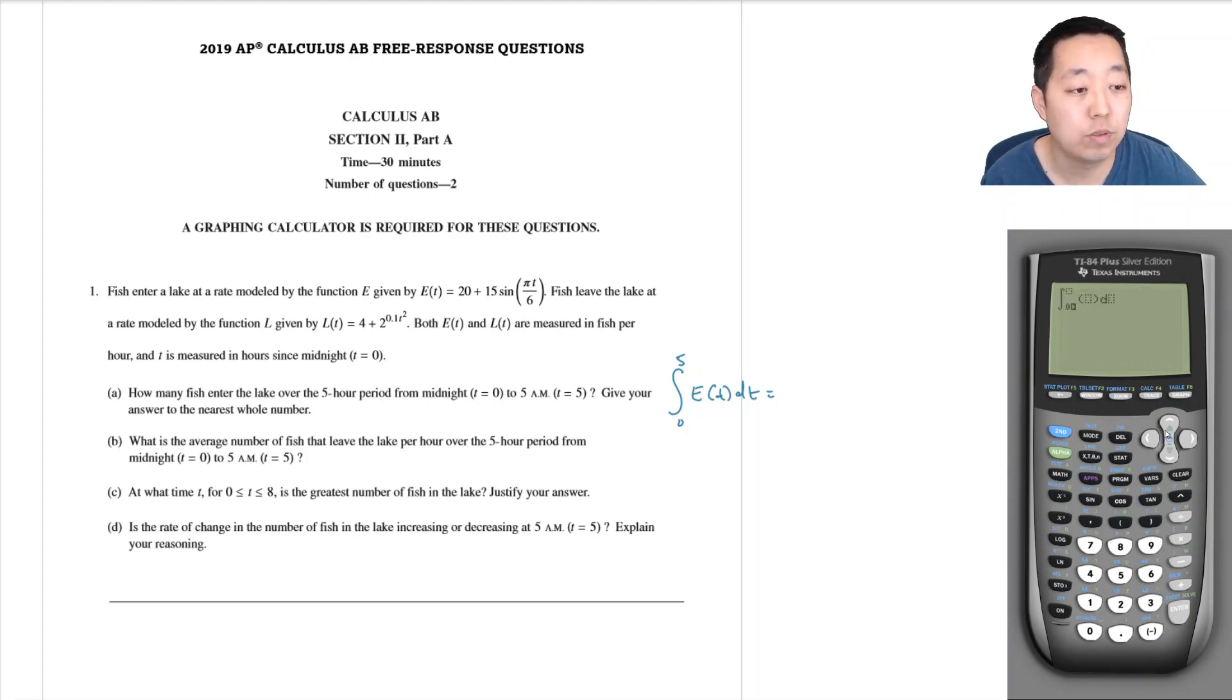The reason I do this is because then it makes it easier to just simply check to make sure I've entered in the equation correctly. Then I can do math 9, which is to do an integral from zero to five. I do y-vars, function, y1, and then I do this over dx, and I get this is equal to 153 fish.